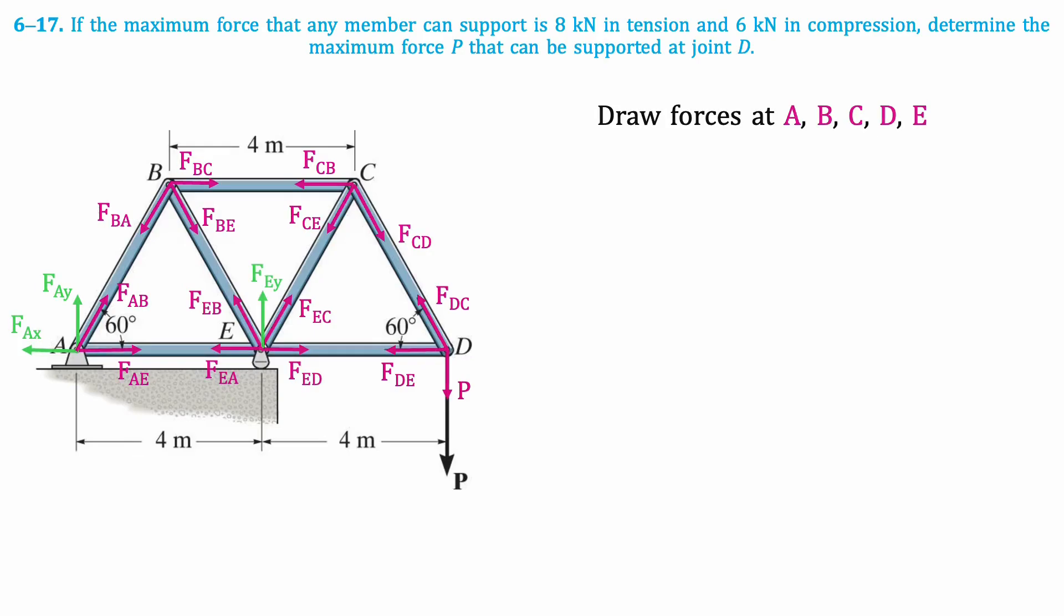Forces along trusses are drawn in pink and reaction forces are drawn in green. At E there is a roller, so there is a reaction force perpendicular to the surface, and at A there is a pin, so we will have both X and Y component forces.